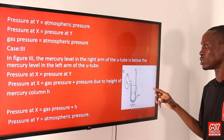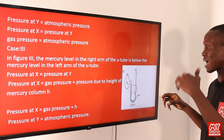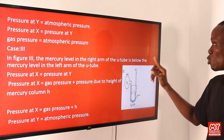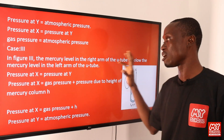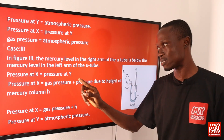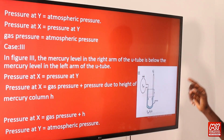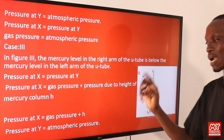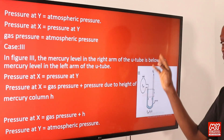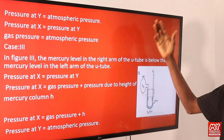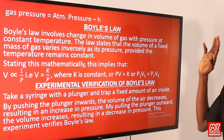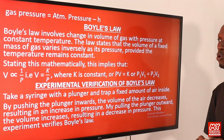Case three: the mercury level on the left arm of the manometer is higher than the mercury level on the right arm. Pressure at S equals pressure at Y, but pressure at S is due to gas pressure plus pressure due to the height of mercury column h. Pressure at Y equals atmospheric pressure. Therefore, gas pressure equals atmospheric pressure minus pressure due to the height of mercury column h.